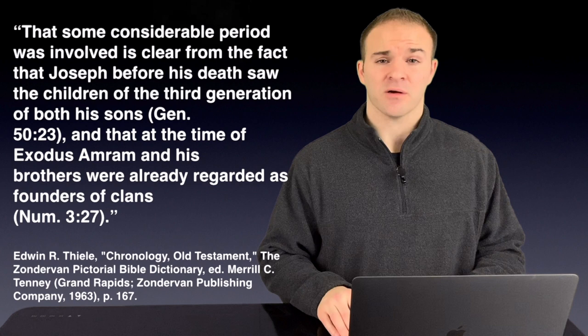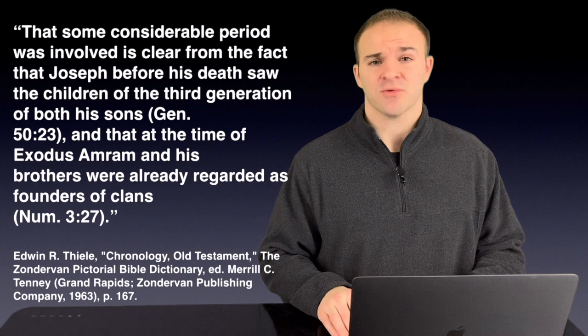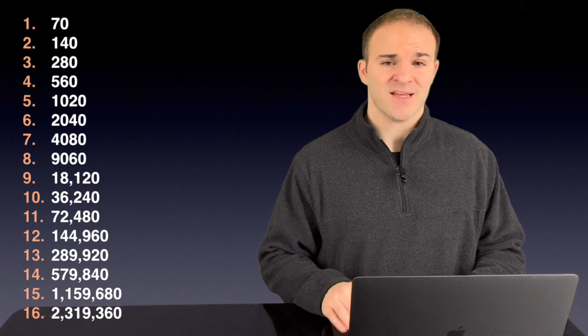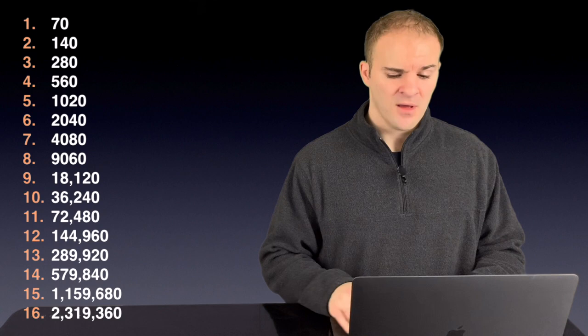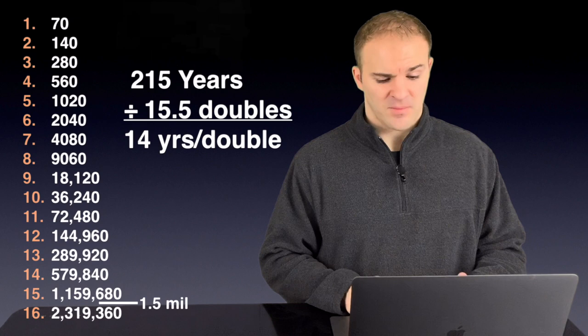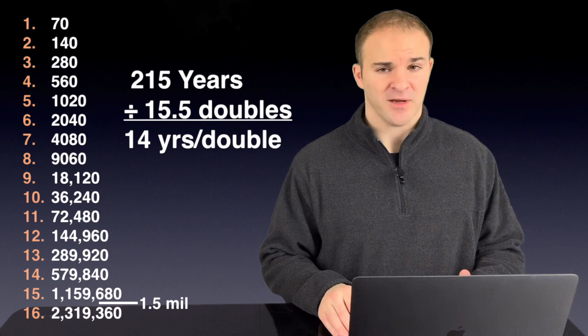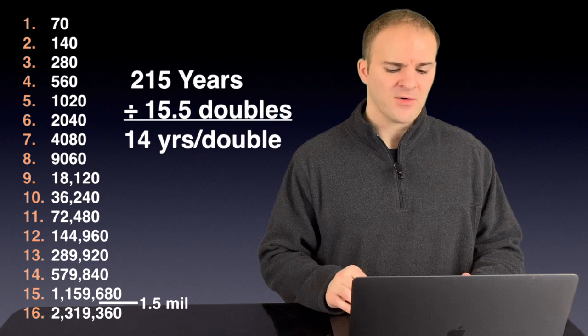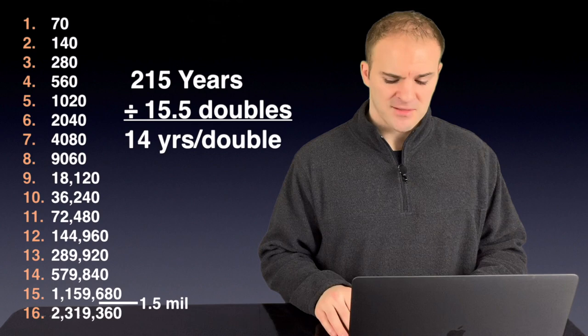But there's one more thing that the shorter proponents need to address. And that's the population growth of Israel while they're in Egypt. Because, they are saying that Israel went from 70 to nearly 1.5 million people in 215 years. So, you would need to double the population 15 and a half times. This would mean that your population would be doubling every 14 years. Is that possible? Sure. Both sides will say that God was blessing Israel while they're down there to make them a great nation. And nothing is impossible with God.